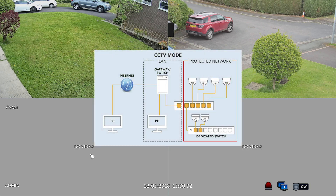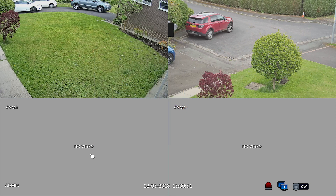In CCTV mode, the NVR will act as a DHCP server for your cameras, which are directly connected to the recorder into 8 dedicated PoE ports on the back, or in the case of the 16 channel model, into the 8 port PoE expansion hub as well, and each camera will have its own protected IP address. In this mode, the NVR will allow clients to connect on one subnet while protecting the cameras on a completely different subnet.